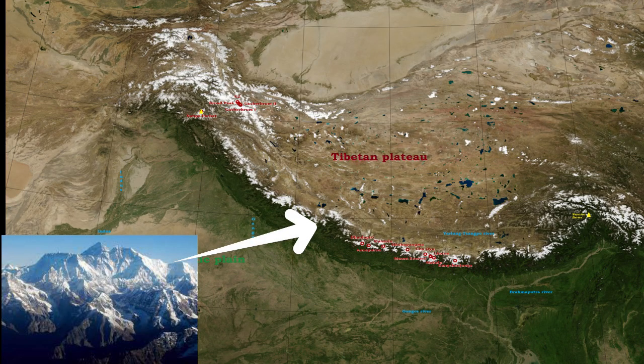Mount Everest is the highest of the Himalayan mountains at 8,850 meters (29,035 feet) and is considered the highest point on Earth. There is good evidence that the Himalayas are getting taller at the rate of about 5 millimeters a year, because the tectonic collision that created the Himalayas 50 million years ago is still happening today.